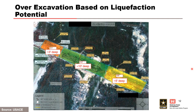Looking upstream at the right abutment, the design team assembled a three-dimensional evaluation using all boring data and CPT data to assess the soft sand deposits. They determined that a 3-foot over-excavation was required near the spillway, a 10-foot excavation at the center of the embankment, and a 5-foot excavation on the left side — all to remove potentially liquefiable materials.